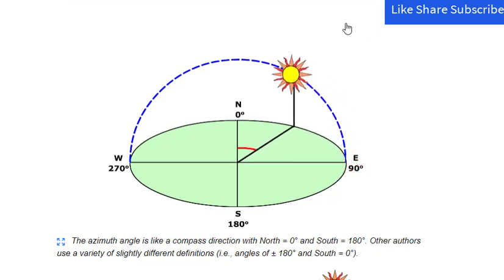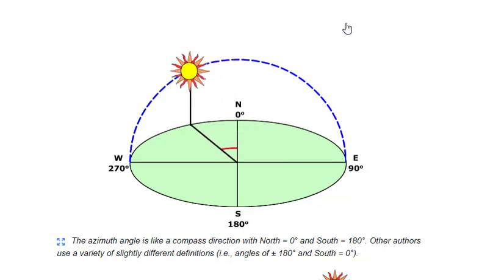The azimuth angle varies throughout the day as shown in the animation below. At the equinoxes, the sun rises directly east and sets directly west regardless of the latitude, thus making the azimuth angles 90 degrees at sunrise and 270 degrees at sunset.